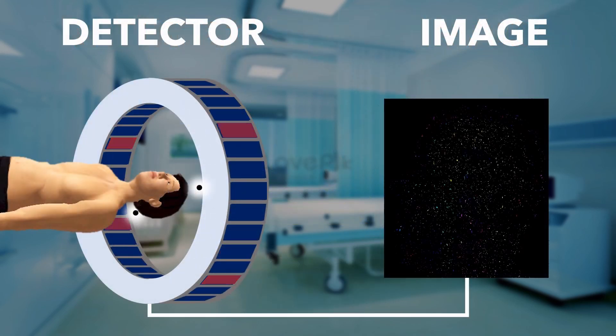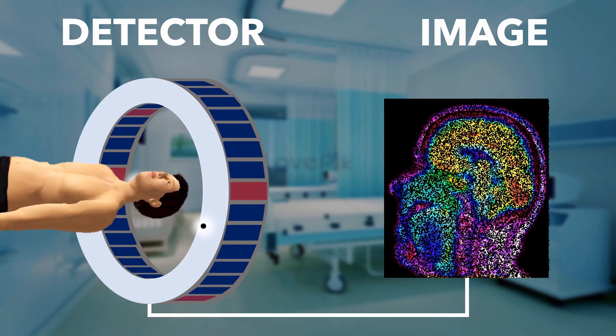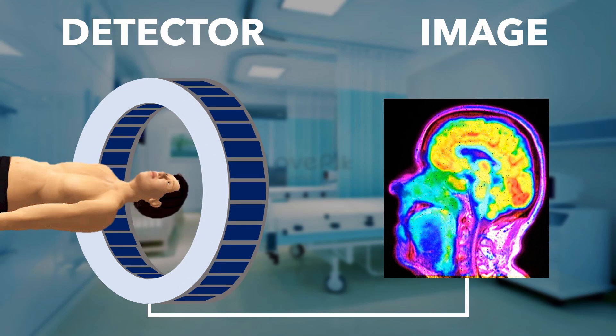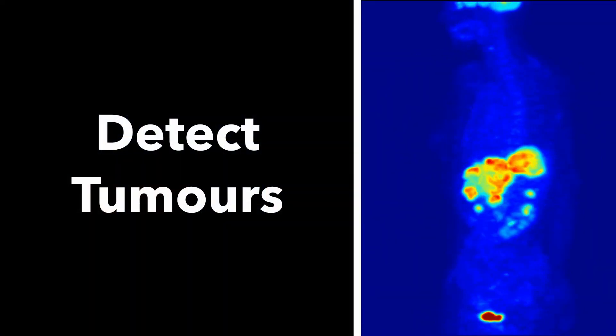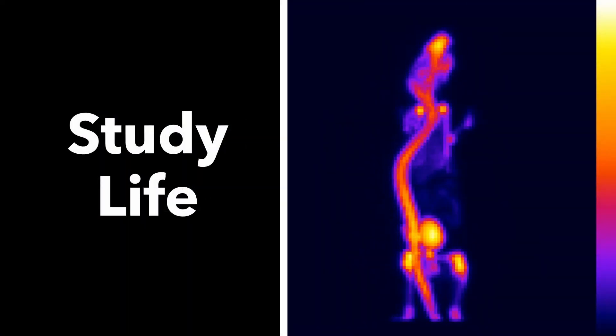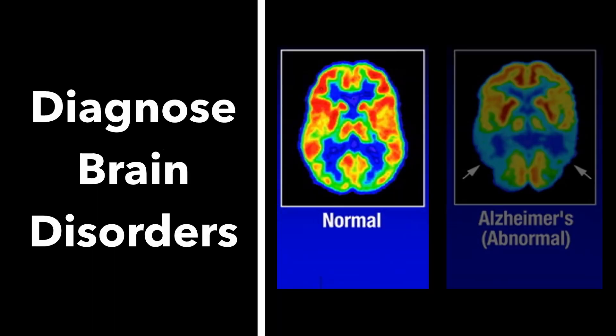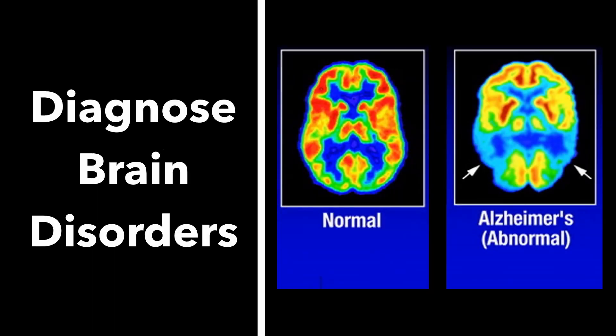Once enough events have been detected, a 3D image can be formed of the inside of people's bodies, and doctors can do useful things. For example, they can detect tumours, study the inside of living things without having to dissect them, and even diagnose brain disorders like Alzheimer's.